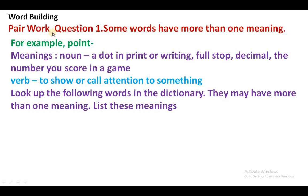Word building. Pair word. Some words have more than one meaning. Kuch shabdon ka ek se zyada meaning hote hain. For example, 'point'. Point as a noun: a dot in print or writing, full stop, decimal, the number you score in a game. Point ka as a noun ye use kiya jaata hai.